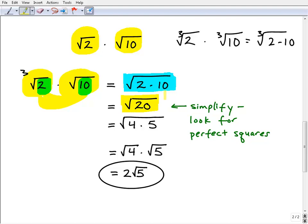So 2 times 10 is 20, so now we have the square root of 20. So I may ask you: simplify the square root of 20. And the key there is we always want to look for perfect squares.